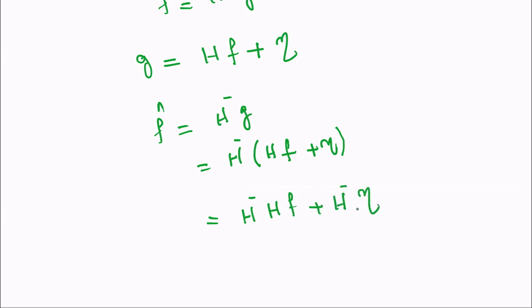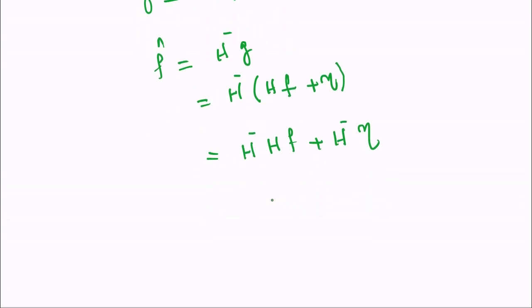In this case we can see that ideally our image should be f, f hat should be equal to f, but we are getting one more additional term, that is the contribution by the noise.